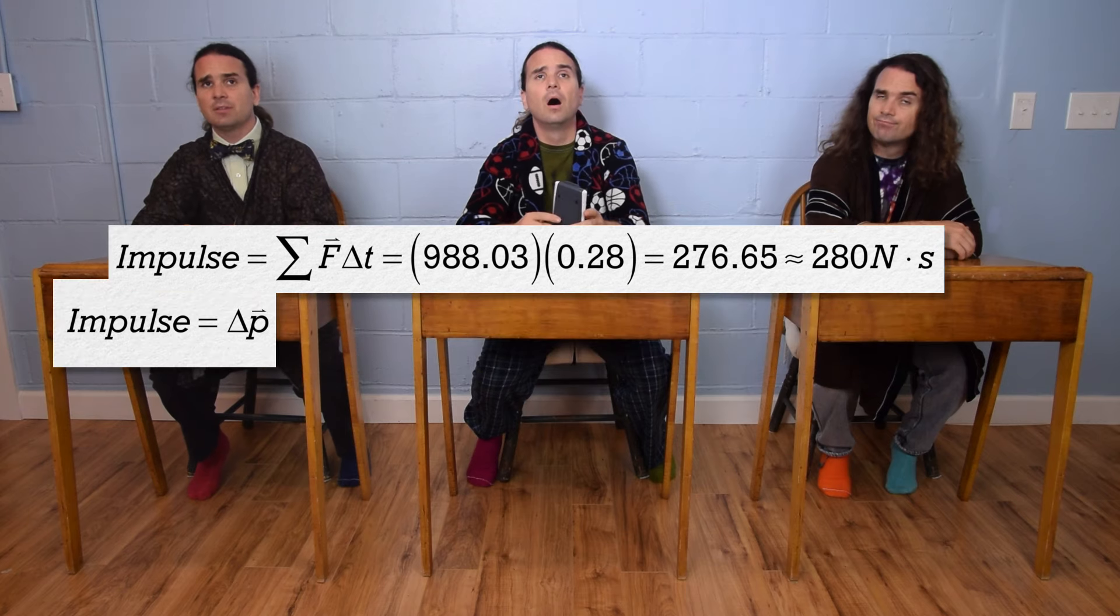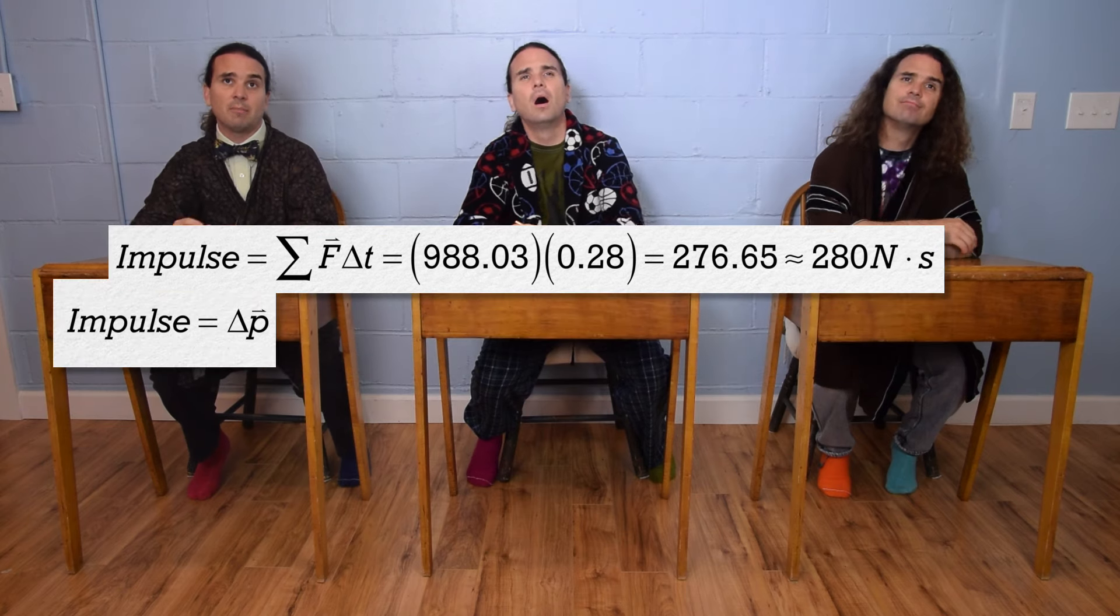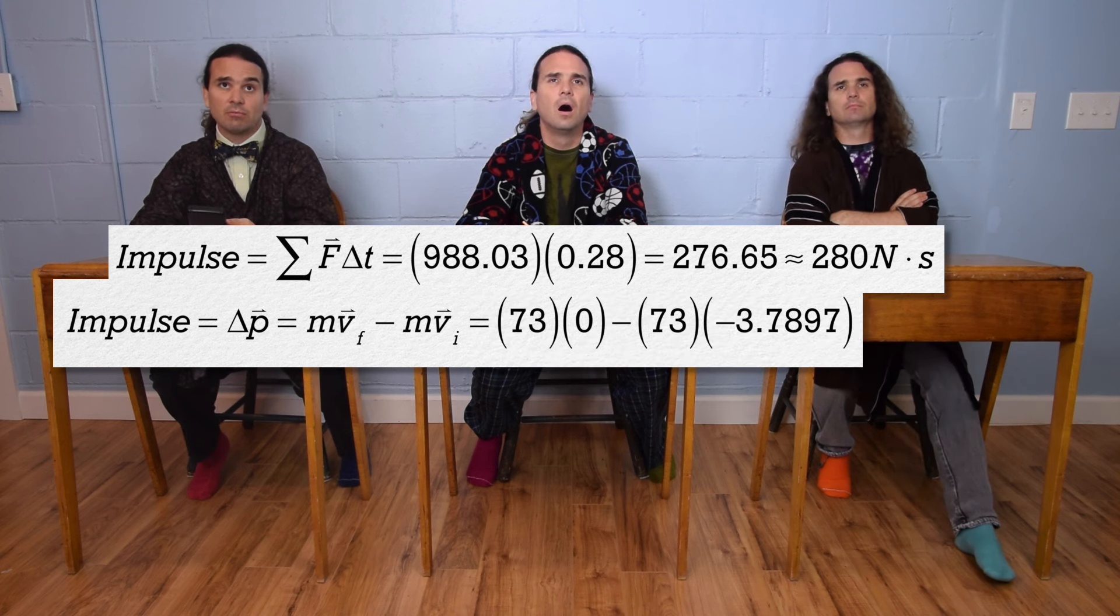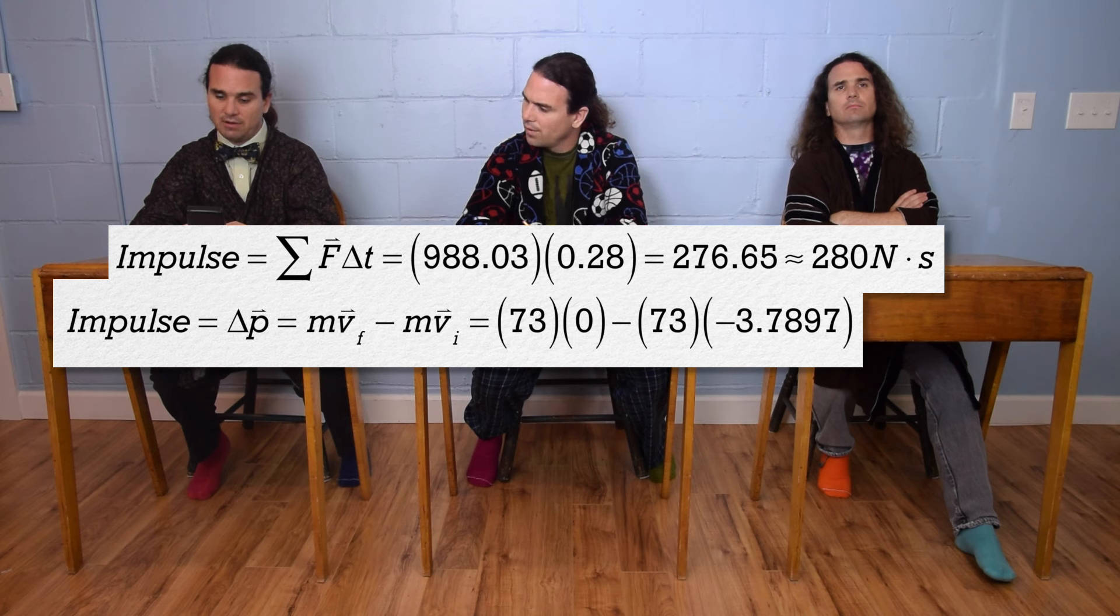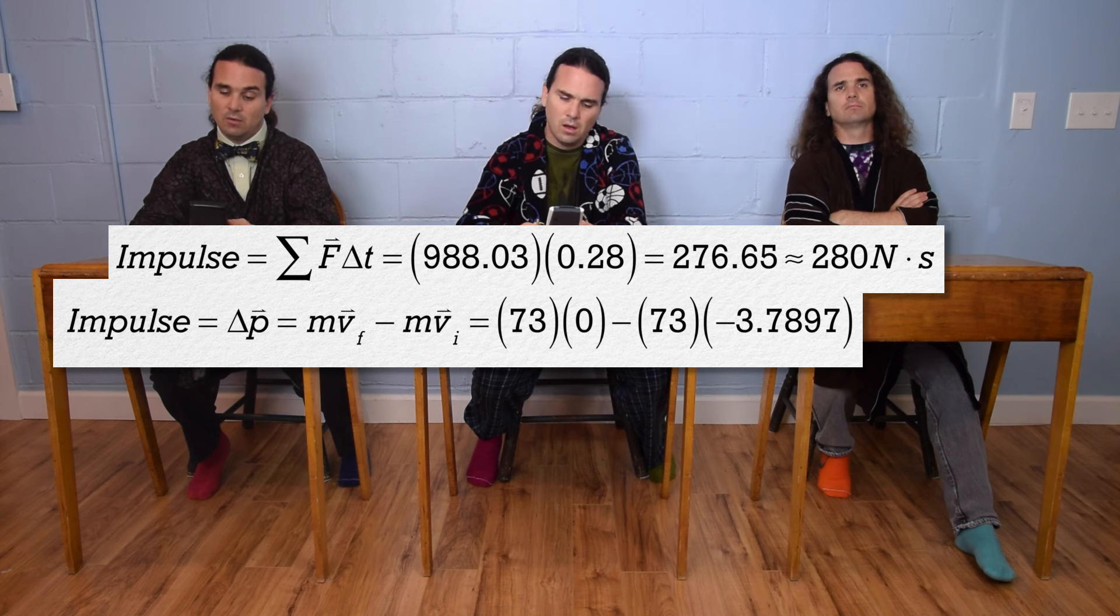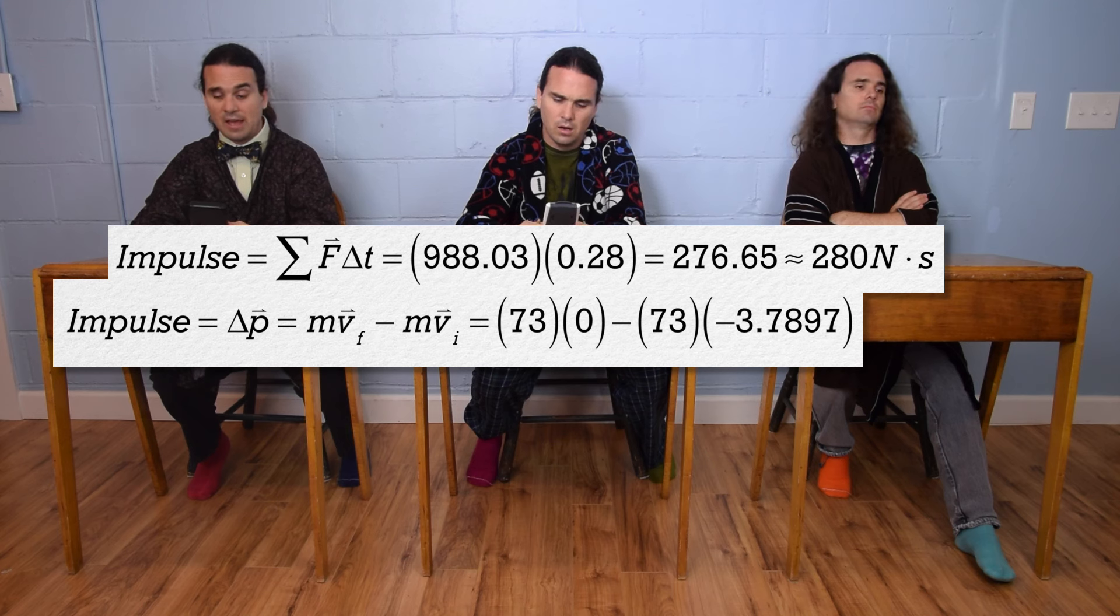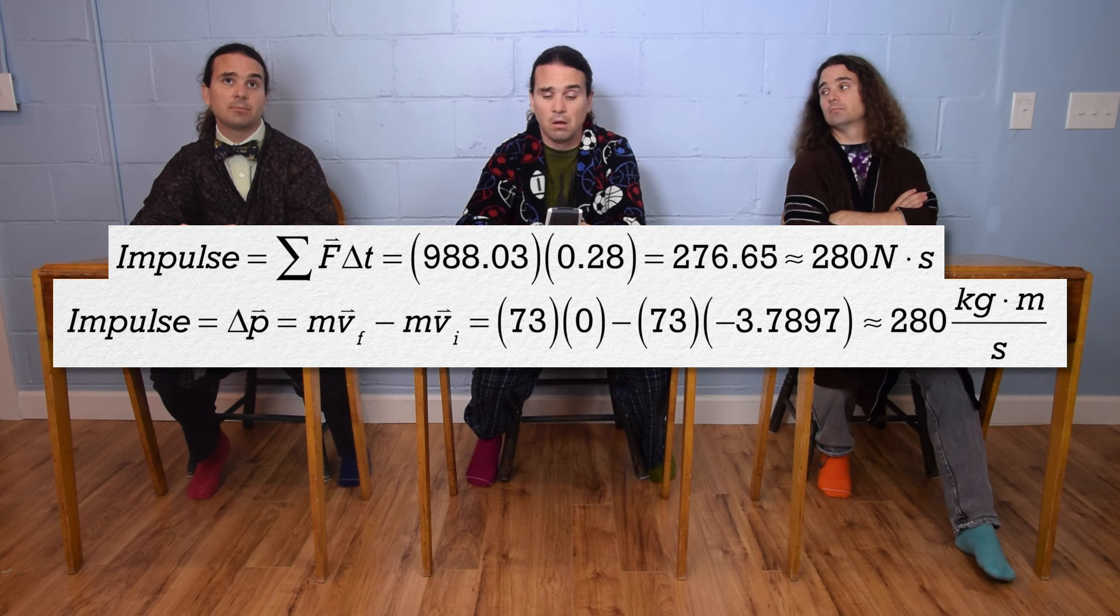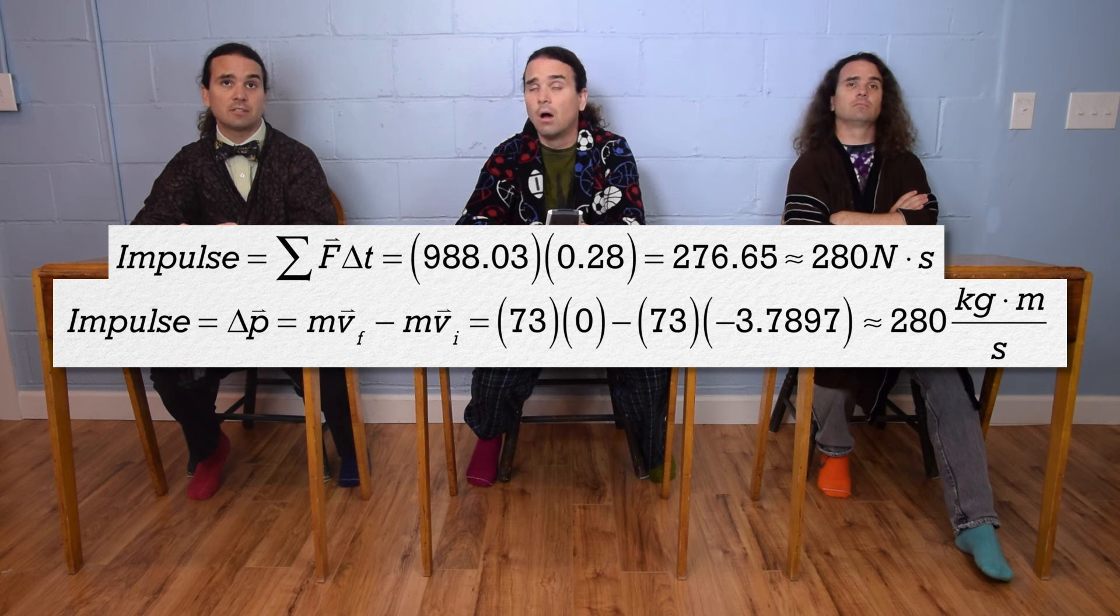Can we also say impulse equals change in momentum or mass times velocity final minus mass times velocity initial, which equals 73 times 0 minus 73 times negative 3.7897, which is 276.65 or 280 with two significant digits. It's kilograms times meters per second.